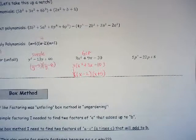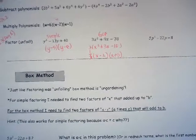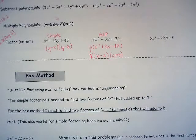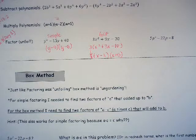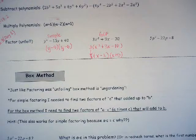This might be the most watched video we have. I'm going to do the box method to solve a problem like this. Just like factoring was unfoiling, the box method — which is still factoring — is ungardening.